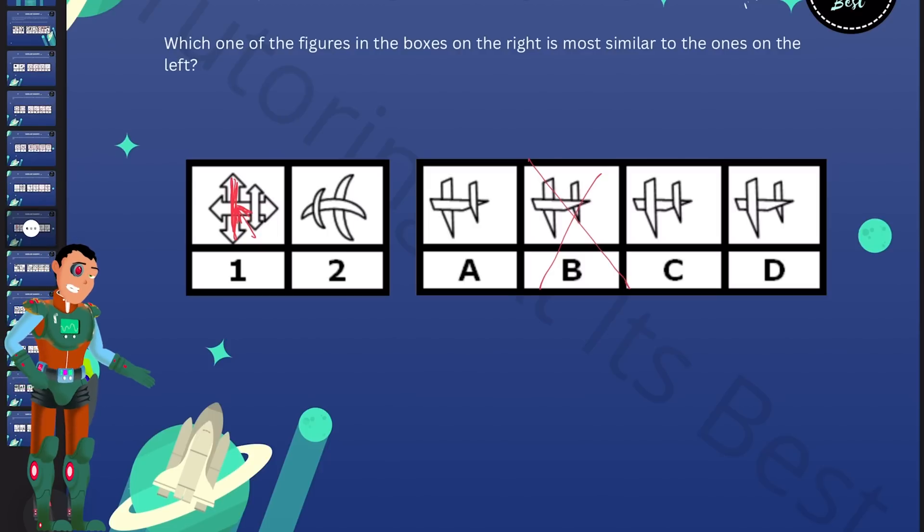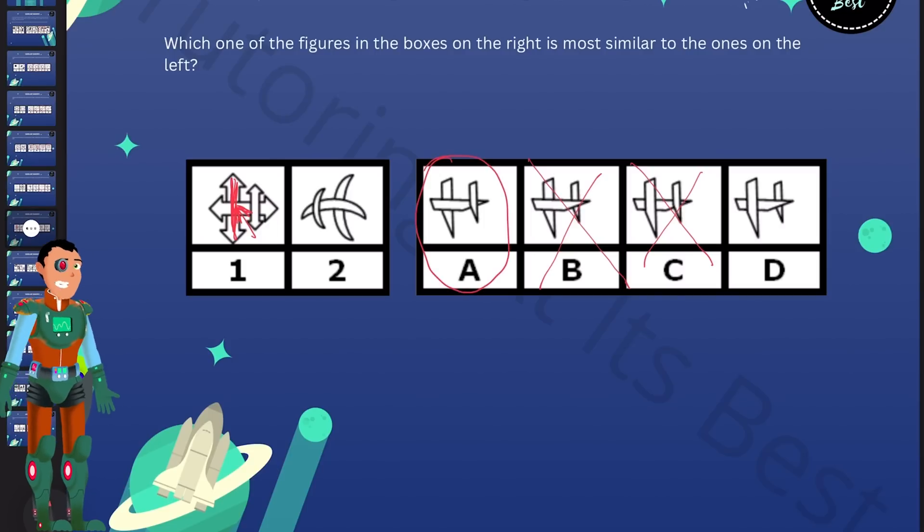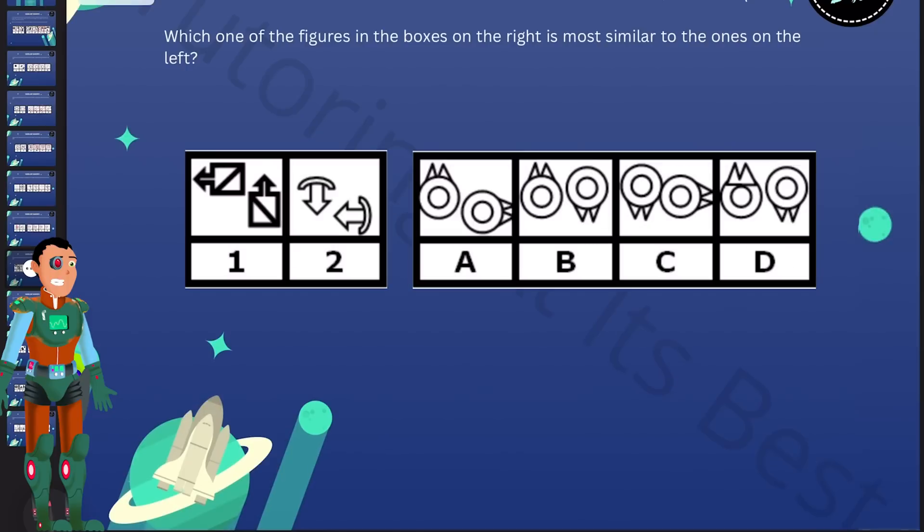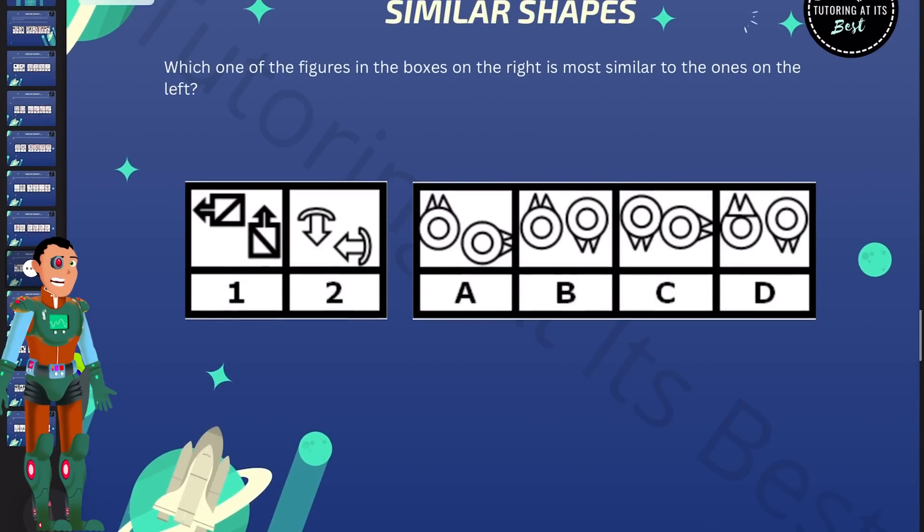In C, it sits under both vertical shapes. So we could eliminate that. However, A actually works for us because we've got the horizontal shape in each figure sitting over the large one only and under the small one. And that's our answer. Let's move over to the next question.